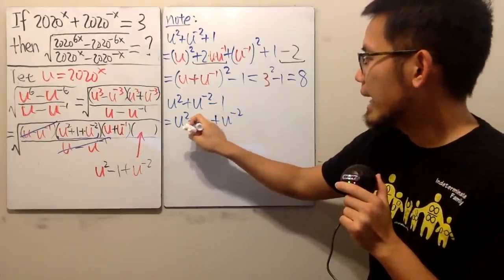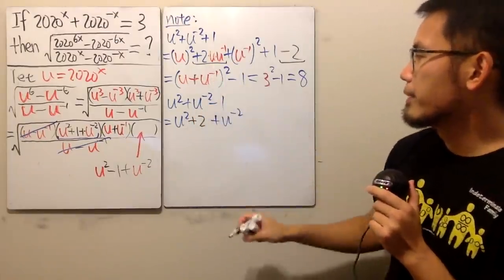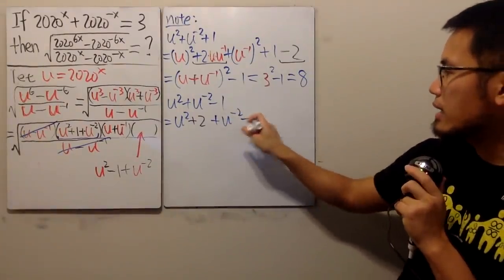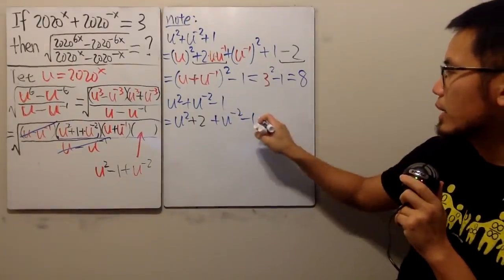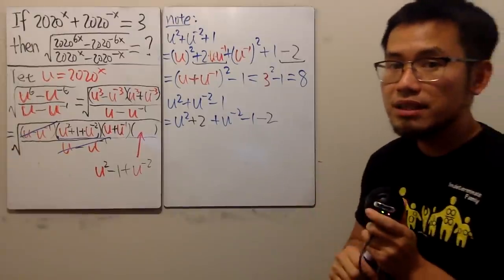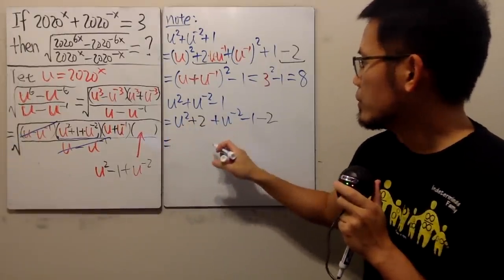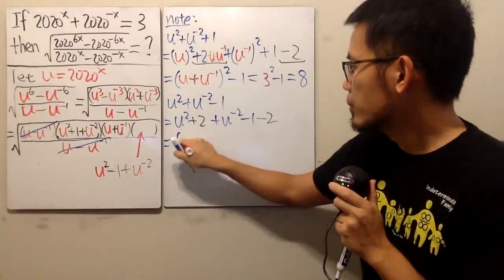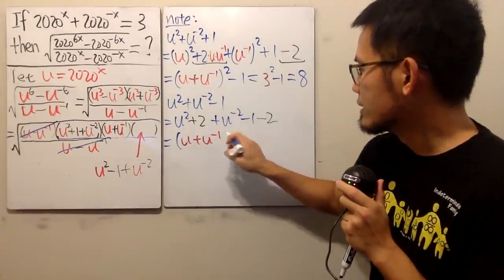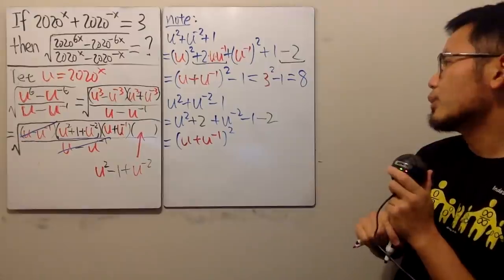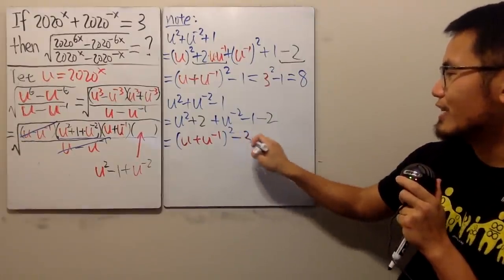Right here, you know, we have to add the two, just like this. In here, we have the negative one. But again, similar reason, we have to just minus two right here. That's the idea. Well, here, all in all, we just end up with u plus u to the negative one squared again. And this and that will give us minus three, which is very nice.